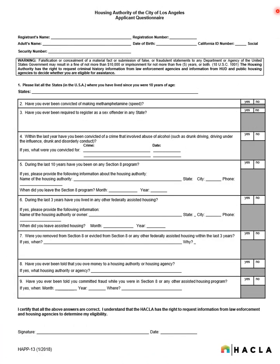Every adult member will need to complete the criminal background check applicant questionnaire. Each adult will need to complete the personal information at the top, answer the series of yes and no questions by circling the option, and then sign and date at the bottom.